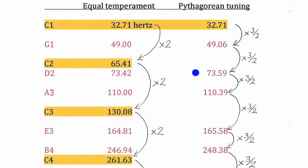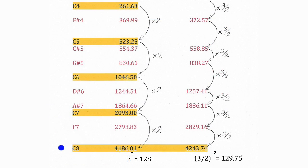By the time we reach the end, the C8, the highest C on the piano, the difference is quite noticeable, both numerically and also if you heard the two notes played together.